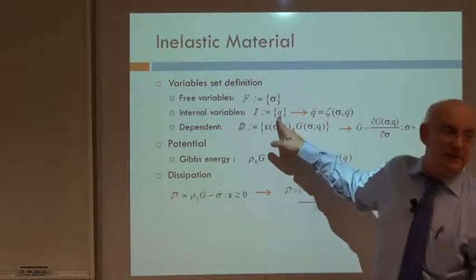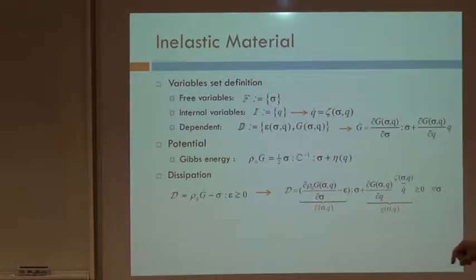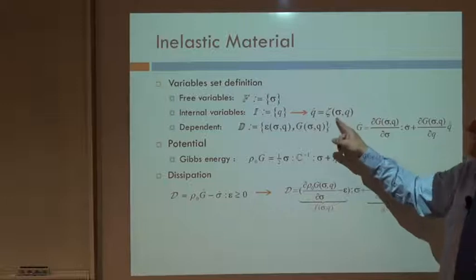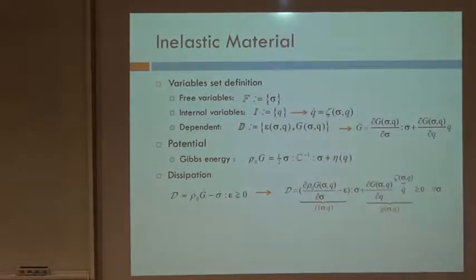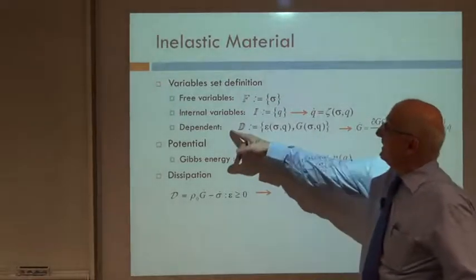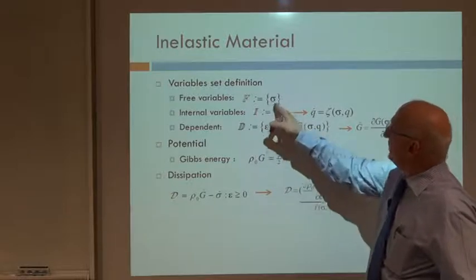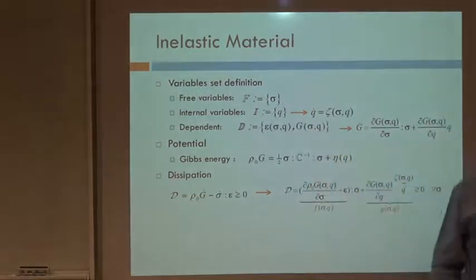For instance, just one internal variable Q. And then we define the evolution of the internal variable in terms of the free variables and the internal variables itself. The remaining variables are dependent. So if we look at the strains, they would be a dependent variable depending on sigma and Q, and the Gibbs potential would depend also on sigma and Q.